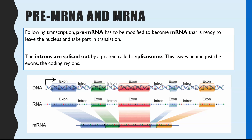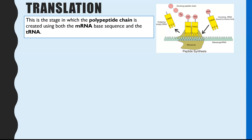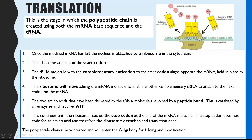The next and final step is translation. This is the stage where the polypeptide chain gets created — the primary sequence of a protein, the primary structure, the sequence of amino acids. This is created using mRNA and tRNA, within the cytoplasm, with the mRNA attached to the ribosome.